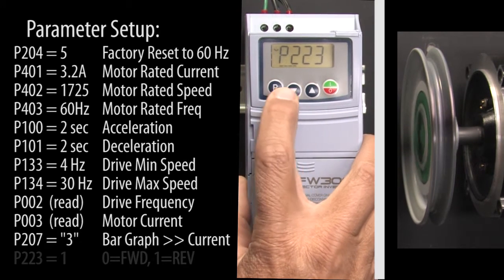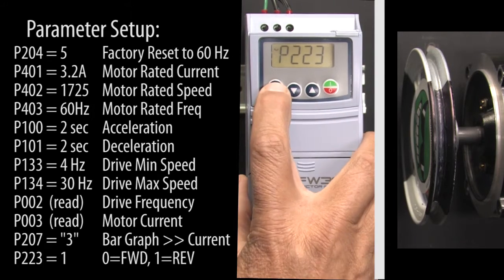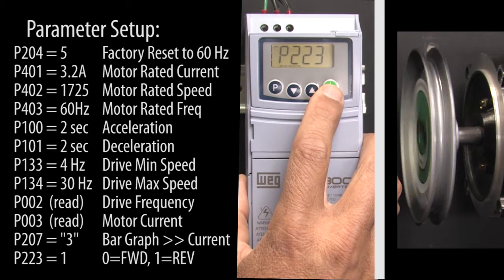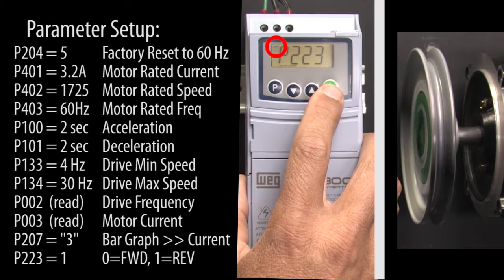Parameter 223 controls forward and reverse. Stop the motor, change it to a 1, hit P to accept that, and now when we run the motor it rotates in the opposite direction and the rotation indicator up here also changes direction.